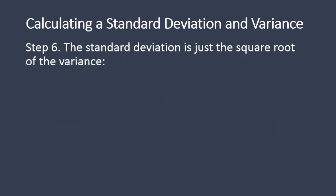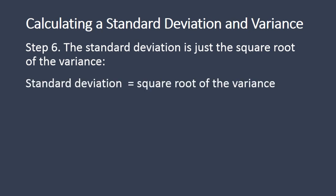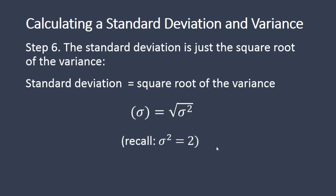The standard deviation is just the square root of the variance. Recall that the variance was 2, so the standard deviation is equal to the square root of 2, which works out to be 1.414.